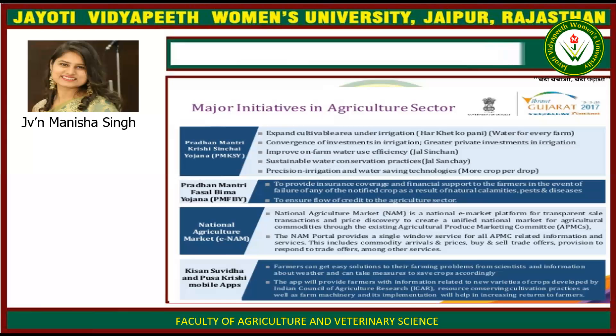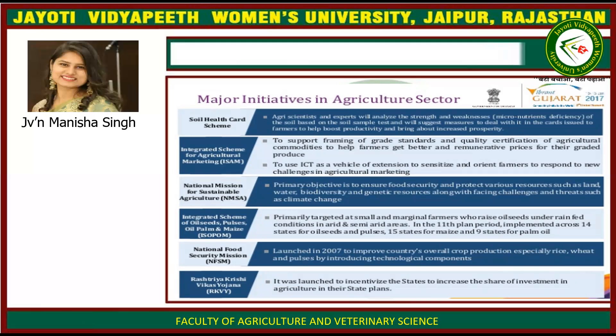Conserving cultivation practices, as well as farm machinery and its implementation, will help increase returns to farmers. The Soil Health Card Scheme has agri-scientists analyze the micronutrient deficiencies of soil based on soil sample tests, issuing cards to farmers with guidance to boost productivity. The Integrated Scheme for Agricultural Marketing (ISAM) supports grading standards and quality certification of agricultural commodities to help farmers get better remunerative prices, and uses ICT to sensitize and orient farmers to new challenges in agricultural marketing. The National Mission for Sustainable Agriculture (NMSA) ensures food security and protects land, water, biodiversity and genetic resources while addressing climate change.